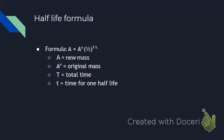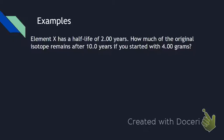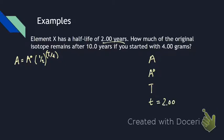We use this formula to determine anything that has to do with half-life, and I'm going to do four sample problems. Here's the first problem: Element X has a half-life of 2.00 years. How much of the original sample remains after 10 years if you started with 4.00 grams? It's good to write out what we have: half-life is 2.00 years, total time is 10 years, and the starting amount A-naught is 4.00 grams.